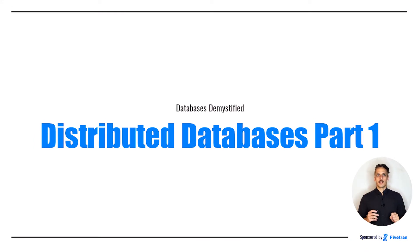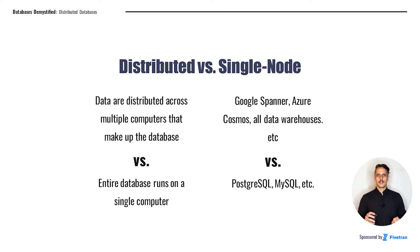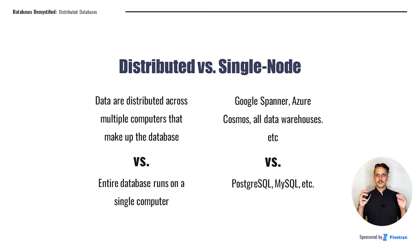This is a really important concept in databases and in computing in general. Today we're going to talk about why we need distributed databases and the two major paradigms that distributed databases are used for. In order to get you oriented, I want to talk a little bit about distributed and single node databases and where you might have encountered these technologies before. Distributed databases, as their name suggests, are made up of multiple computers where the data are distributed across those different computers. That's in contrast with single node databases where the entire database runs on a single computer, sometimes called a server.